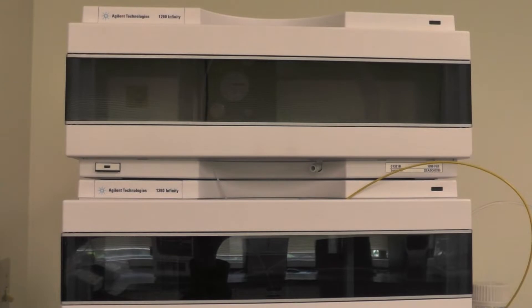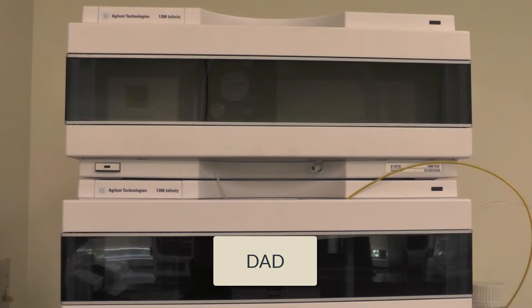The detector generates signals from compounds as they elute from the column. In our facility, there are two types of detectors available: a UV visible light detector DAD and a fluorescence detector FLD. You may only choose one detector for your analysis at a time. In this video, we will use the DAD detector.